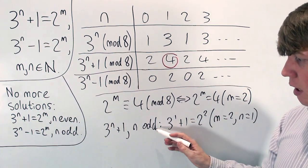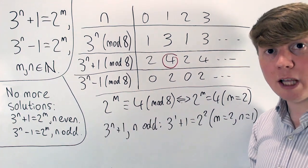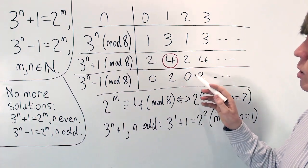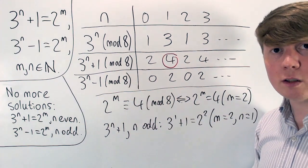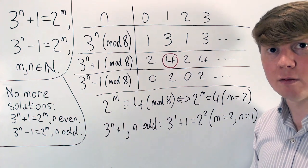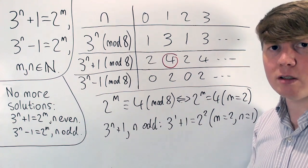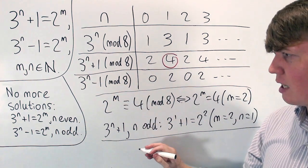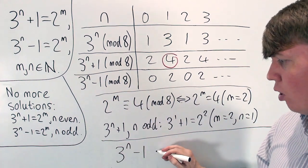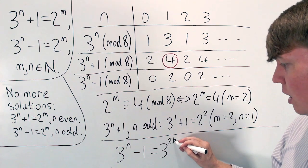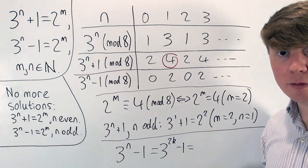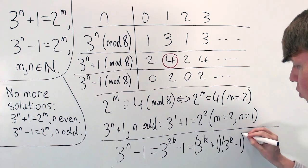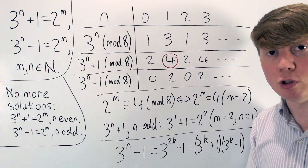All that's left is the case where n is even for our second equation. Unfortunately when n is even, 3 to the n minus 1 is still a multiple of 8, so nothing is ruled out. But there's a nice trick: since n is even, we write n as 2k, so 3 to the 2k minus 1, and use the difference of two squares identity to write this as 3 to the k plus 1 times 3 to the k minus 1. We'll use this factorisation to rule out more cases.